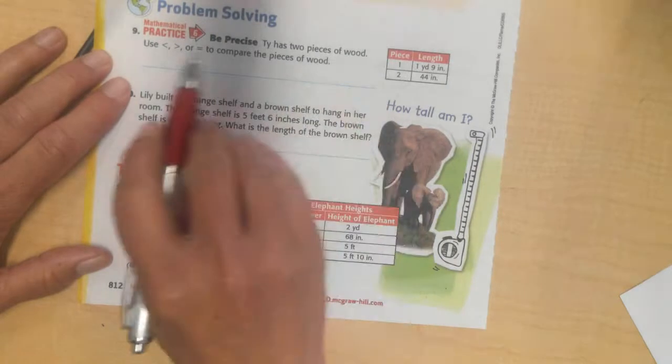Alright, Ty has two pieces of wood. Use less than, greater than, or equal to, to compare the pieces of wood.